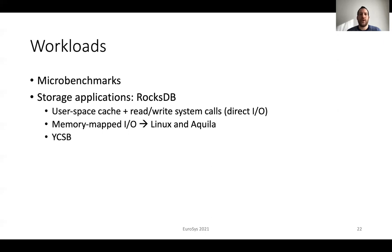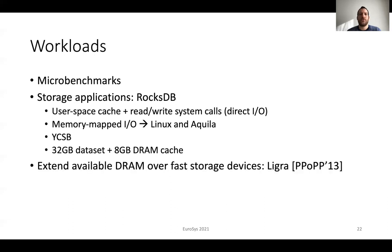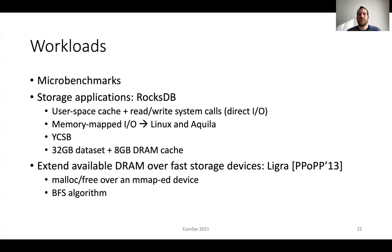We also use YCSB with a 32 GB dataset and 8 GB of DRAM cache. Additionally, we evaluate Akila in terms of extending the available DRAM over fast storage devices. In this case we use Ligra, a graph processing framework. To achieve that, we translate all malloc and free calls to be over a memory mapped storage device and not the DRAM heap. We use the BFS algorithm with a 64 GB dataset and 8 GB of DRAM cache.